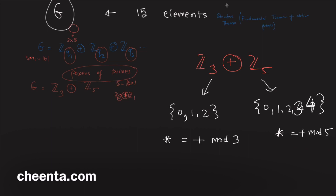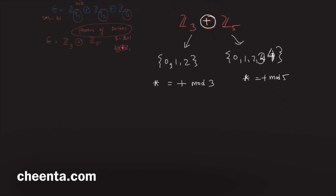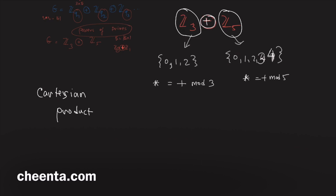What is the meaning of this direct sum symbol? It is sometimes known as the direct sum. To compute it, you simply take the Cartesian product of the two sets — take the Cartesian product of Z3 and Z5.